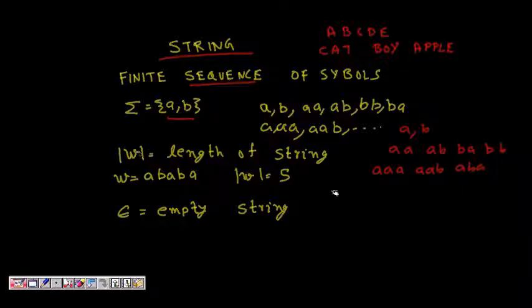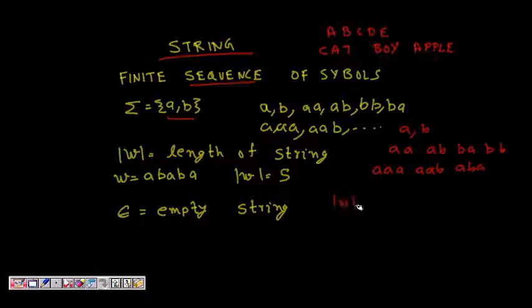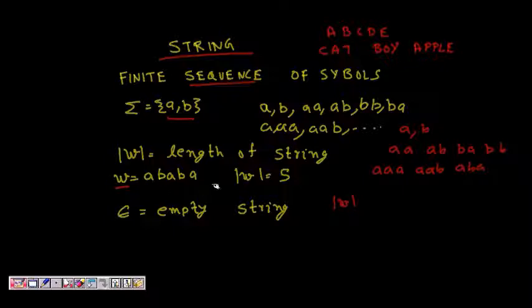The letter w is used to denote a string, and |w| denotes the length of the string. For example, if w is 'ababa', then |w| is five.